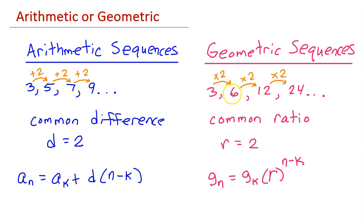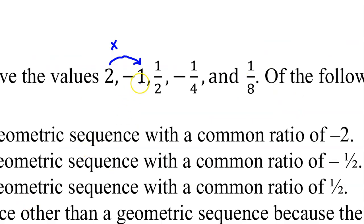You can find the common ratio by dividing each term by the previous term. In this case, 6 divided by 3 is 2, 12 divided by 6 is 2, and 24 divided by 12 is 2. Negative 1 divided by 2 is negative 1 half, so that's the first ratio.